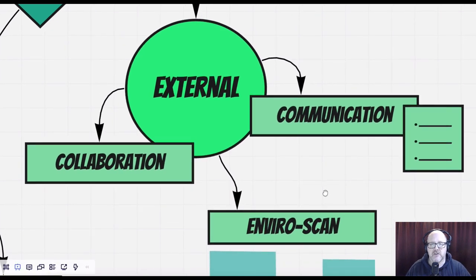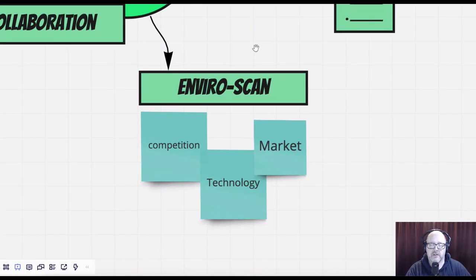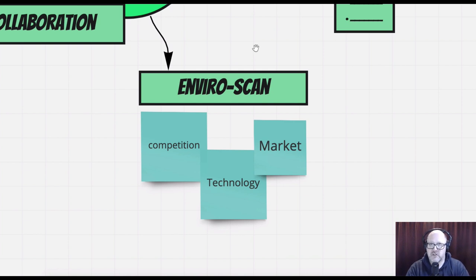The other external element is an environmental scan — how does the team view their competition, changes in technology, and the marketplace they're in? They'll begin to take an environmental scan of the external environment, which includes competition from rival companies and even from other teams within the organization. It will certainly include technology and the impact it has on their plans and goals. It also includes the marketplace and how it responds to changes in its environment, because this is an open systems perspective — changes in the external marketplace will have an effect on the team.